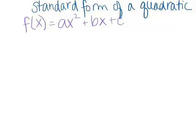Notice what we have here. We have three terms: we have a quadratic term, a linear term, and what's known as a constant term.